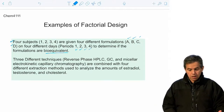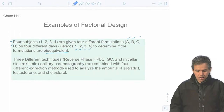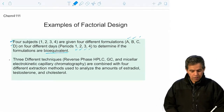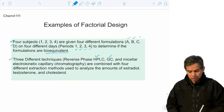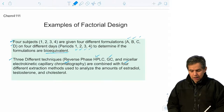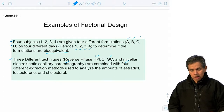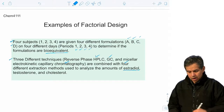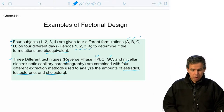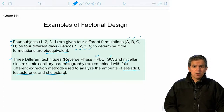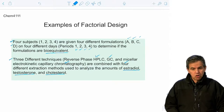We have four subjects, four formulations, and four days. If you would like to do this measurement, it will require a lot of measurements. Another example of factorial design is when we have three different techniques — reverse phase HPLC, GC, and micellar electrokinetic capillary chromatography — combined with four different extraction methods, to analyze the amounts of three compounds: estradiol, testosterone, and cholesterol. To find the optimal condition, we will have to do multiple measurements, which may be time-consuming and expensive.